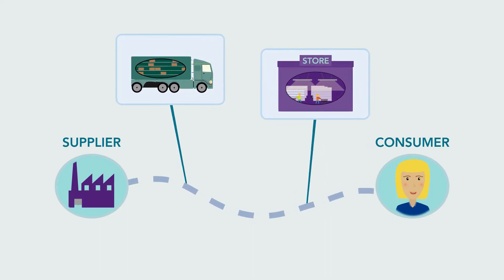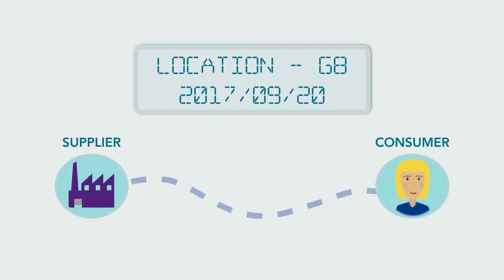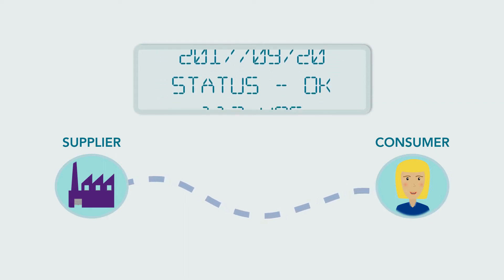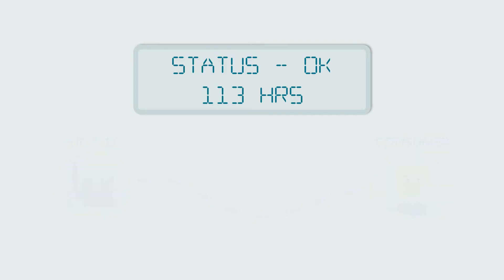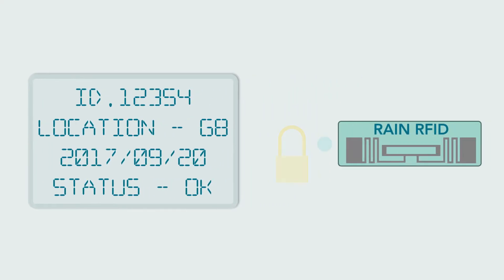In the other direction, RAIN RFID helps trace items from the consumer back to the supply source and everywhere in between. Additionally, trust can be securely and conveniently established by authenticating each item during its lifecycle.